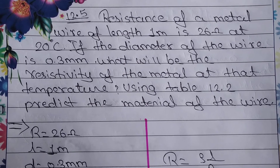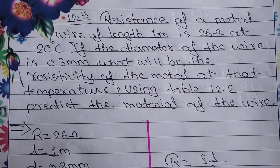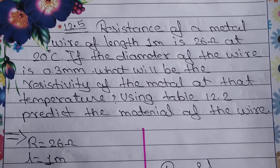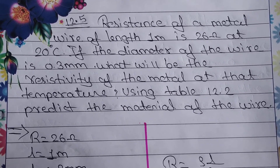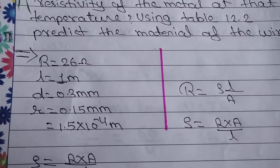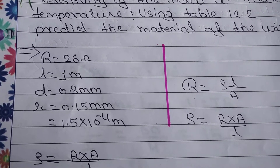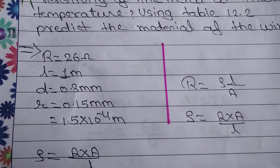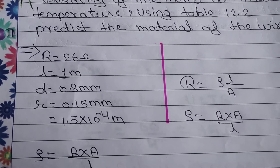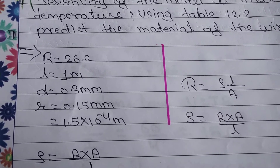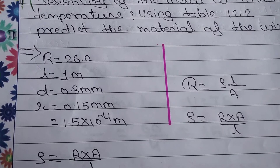We also need to identify the metal — whether it is copper, silver, or manganese. The diameter is 0.3 mm. We convert diameter to radius: radius equals 0.15 mm. But we need the value in meters, so 0.15 mm converted to meters is 1.5 into 10 to the power minus 4 meter.